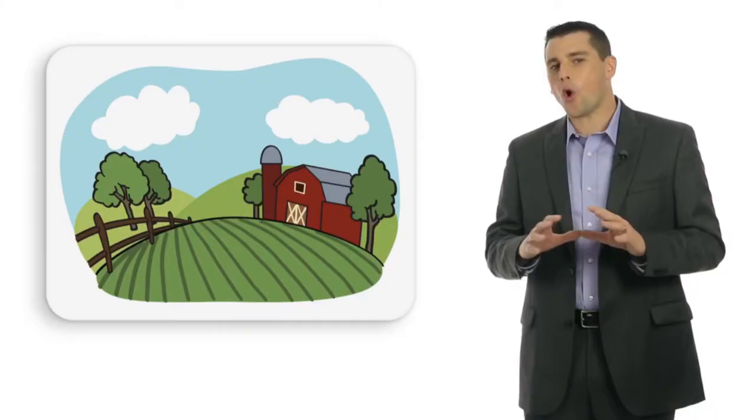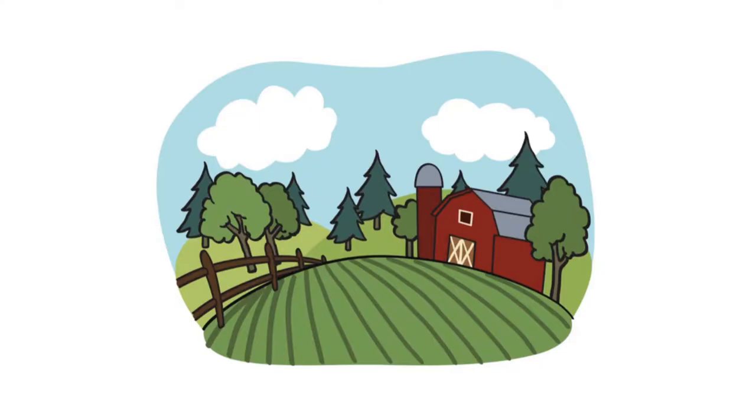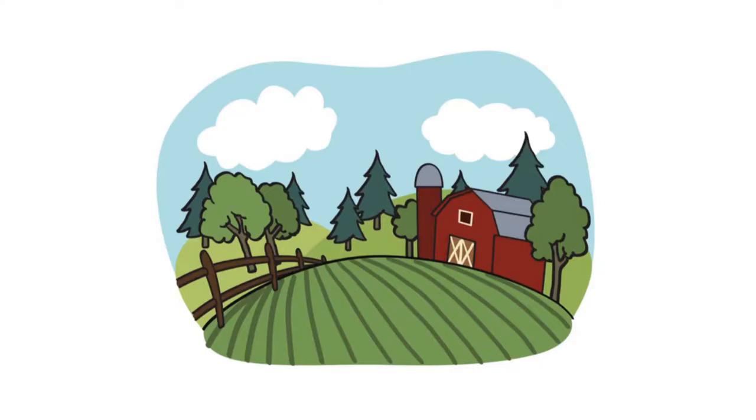We use the term land to describe all natural resources used in production. This includes farmland, forests, oil, oceans, fish, and other gifts of nature.